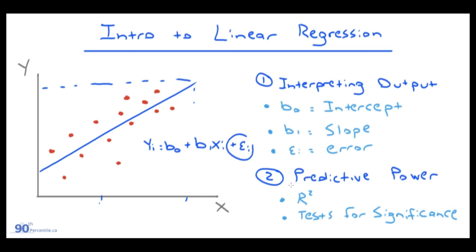The error term exists because the regression model isn't perfect — it rarely has 100% predictive power. We're going to analyze what this means. We'll look at how to interpret the intercept, slope, and error term, and look at metrics like the R-squared and some significance tests, which are similar to the hypothesis tests we've covered previously, but with slightly different calculations.